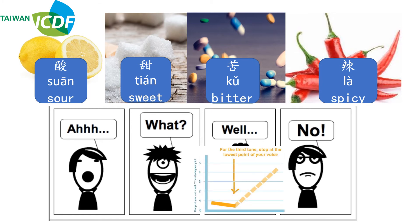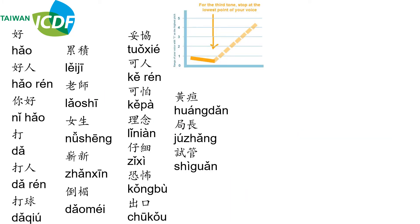One thing you need to keep in mind is that when native speakers talk, we don't pronounce the complete third tone — it stops at the lowest point of your voice. Let's have some practice of the third tone: 好，好人，你好，打，打人，打球，累积，老师，女生，崭新，倒霉，妥协，可人，可怕，理念，仔细，恐怖，出口，黄蛋，职掌，市管.